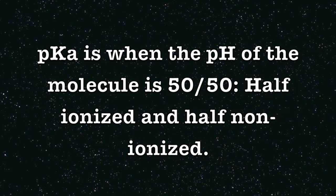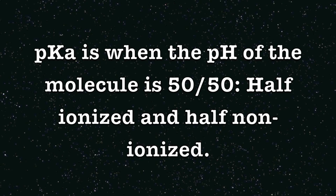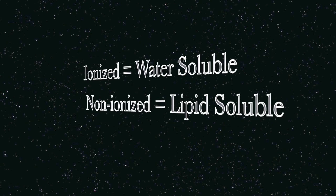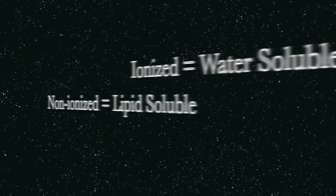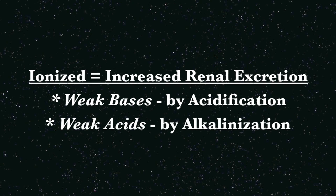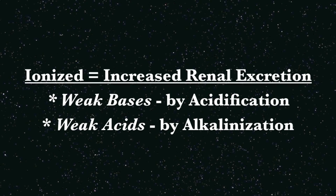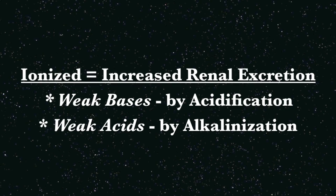The pKa is when the pH of the molecule is 50-50. Ionized and non-ionized is water and lipid soluble, respectively. What does that mean? It means ionized leads to increased renal excretion — weak bases by acidification, and weak acids by alkalinization.